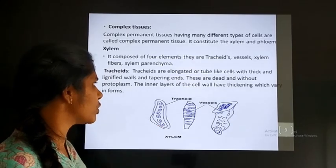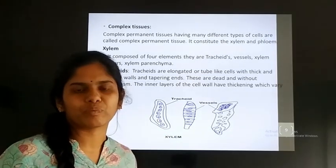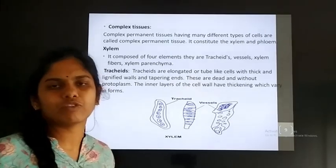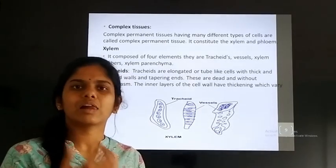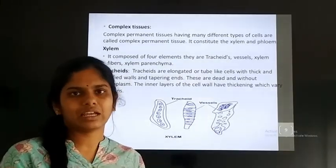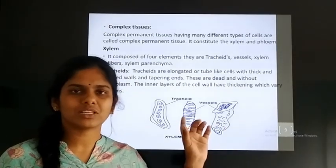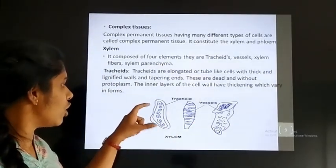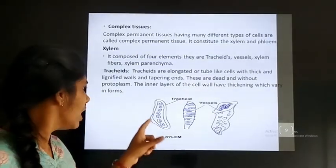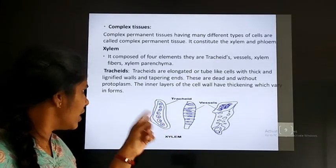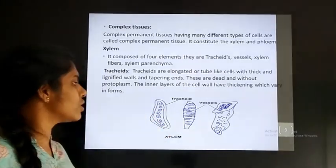These are all dead cells. The inner wall of the tracheids is very important. Based on the inner wall, the tracheids can be classified into different types: annular, spiral, scalariform, and reticulate. The tracheid is a long structure with no protoplasm — it is a dead tissue. The cell walls are lignified, and this is the structure of tracheids.